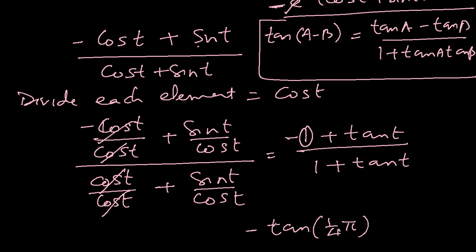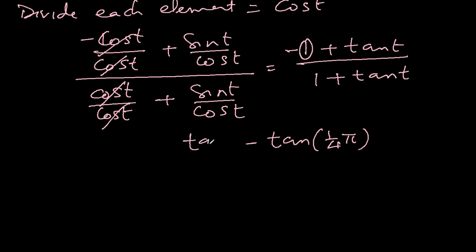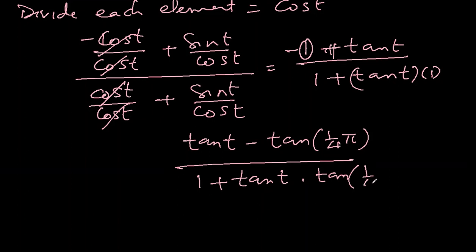So if you look at this, this -1 can be written as -tan(π/4), because the value of tan(π/4) is 1. So in place of -1, I wrote this. And because tan(t) is positive, let me write before this. tan(t) first because it is positive, so negative later. And here I can write 1 plus, and I can multiply this tan(t) by 1. That does not make any difference. So I will write here tan(t) multiplied by tan(π/4).